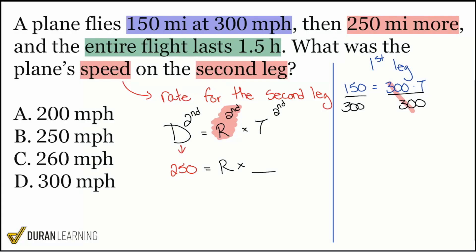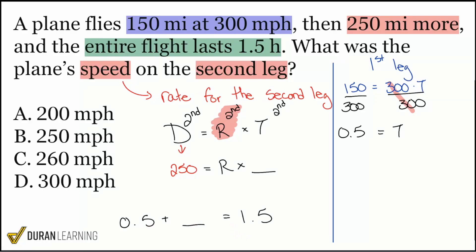What do we notice about 150 divided by 300? You don't have to be a pro at long division — 150 is exactly half of 300. So the time is 0.5, half of an hour, for the first leg. And we know the total time is 1.5 hours. So: half an hour plus what gives us an hour and a half? Exactly one hour. So the second leg time is one hour.